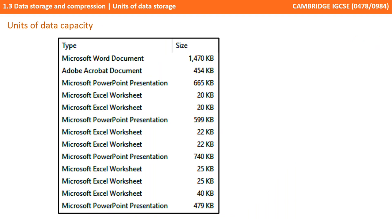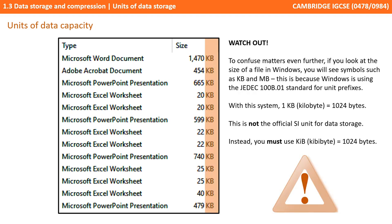Let's look at some real examples. Here we can see a list of files in a typical file storage system — we've hidden the file names so we can focus on what's important. Just a quick note to confuse the matter even further: if you look at the size of a file in Windows, you will see symbols such as KB and MB. This is because Windows uses a completely different standard — a KB or kilobyte in Windows is 1,024 bytes, which isn't the official international system of units for data storage. In our exam, we should be using KiB — kibibytes — 1,024.